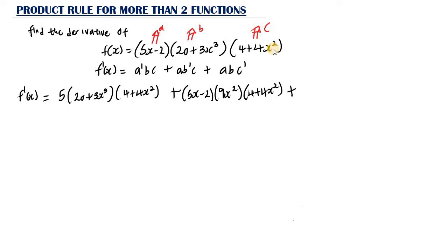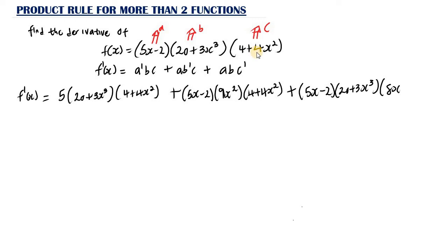Then plus A, which is 5s minus 2, multiplied by B, which is 20 plus 3s cubed, then multiplied by C prime — the derivative of the third function. The derivative of 4 plus 4s squared gives us 8s. So this term is multiplied by 8s. Now we need to expand everything.